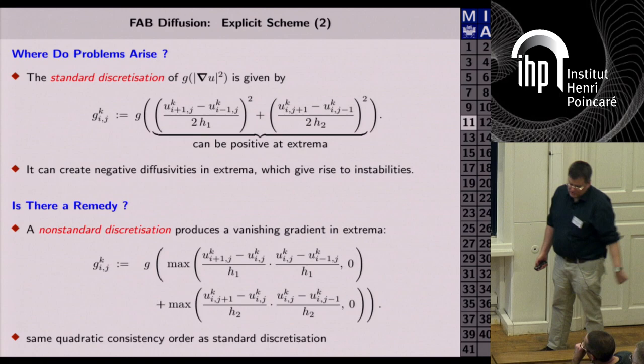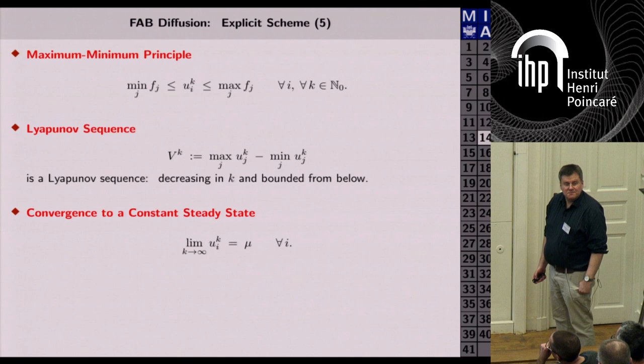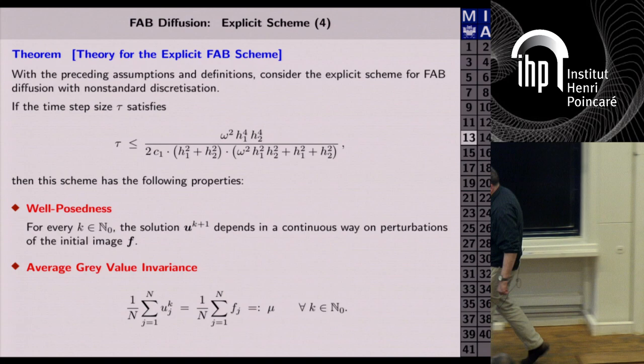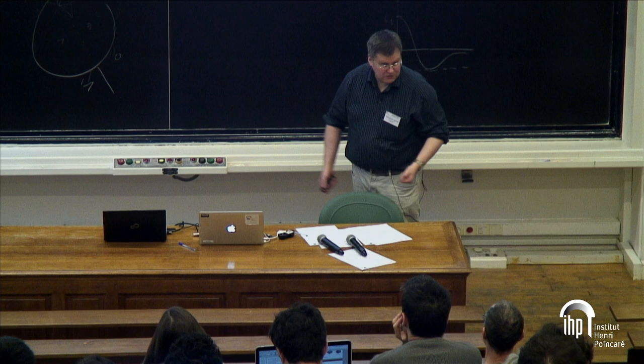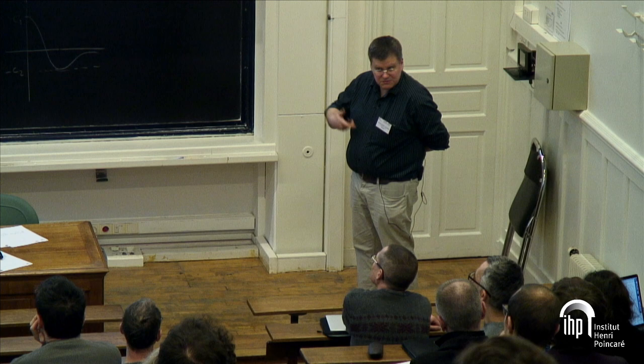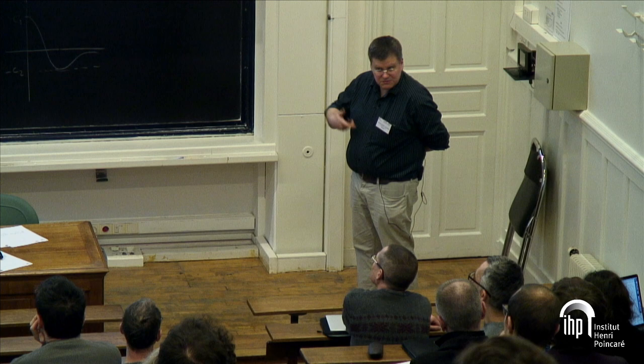The bad news is this stability condition is extremely restrictive. It gives time step size limitations on the order of 10⁻⁵ to 10⁻⁶, whereas forward diffusion typically allows steps around 1/4. So you suffer a slowdown of several orders of magnitude. The question is: this scheme is nice in theory but too slow in practice — can we speed it up without sacrificing any of these nice theoretical properties?